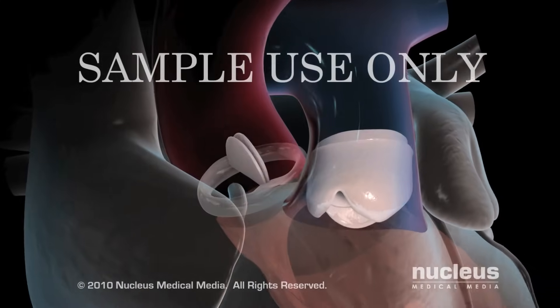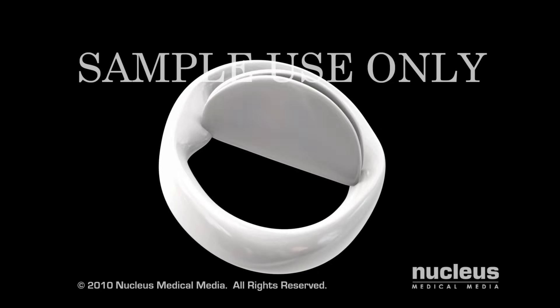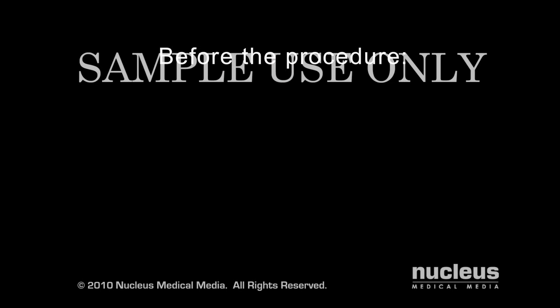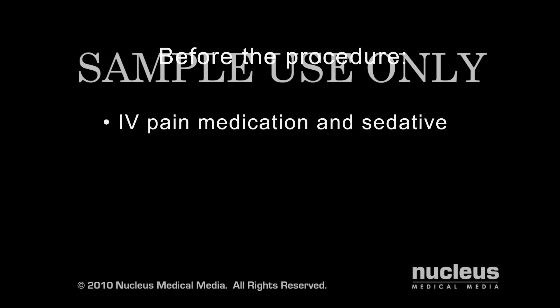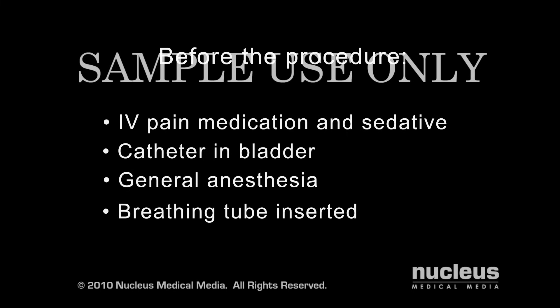An aortic valve replacement is performed to restore the valve to normal function. Before your procedure, an IV line will be started in your arm to provide fluids and medications. A catheter will be inserted into your bladder to drain urine. Aortic valve replacements are done under general anesthesia, which means you will be asleep for the duration of the operation, and a tube will be placed through your mouth and into your windpipe to help you breathe during surgery.